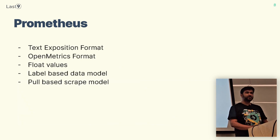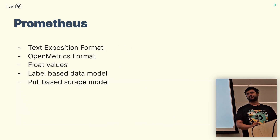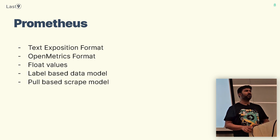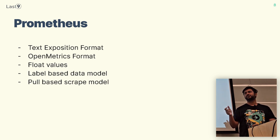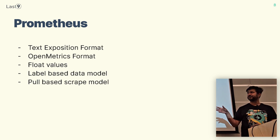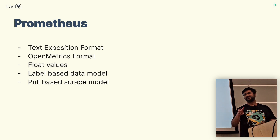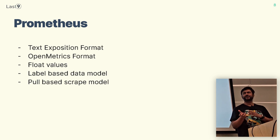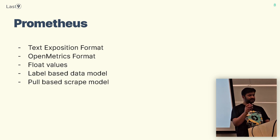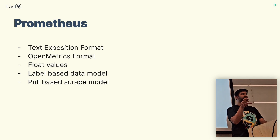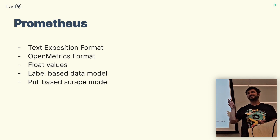Some interesting things about Prometheus: it's a very simple text format — no binary protocol or protobuf needed to start emitting metrics. It's a simple text exposition format. There is also a new standard recently established called OpenMetrics. The values are floats — every instrument gets a float value. It's a multidimensional label-based, pull-based data model, and it works on the pull-based model, whereas OpenTelemetry is different.